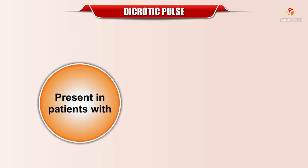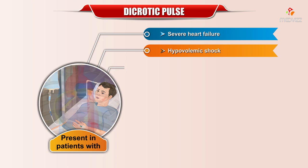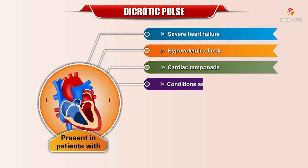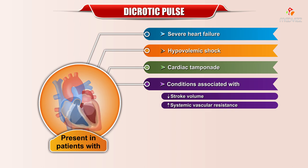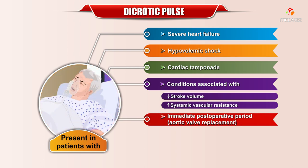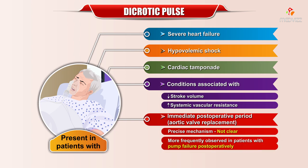A dicrotic pulse may also be present in patients with severe heart failure, hypovolemic shock, cardiac tamponade, conditions associated with a decreased stroke volume and elevated systemic vascular resistance, and during the immediate postoperative period following an aortic valve replacement. The precise mechanism for a dicrotic pulse in the last group is not clear. It is more frequently observed in patients with pump failure postoperatively.